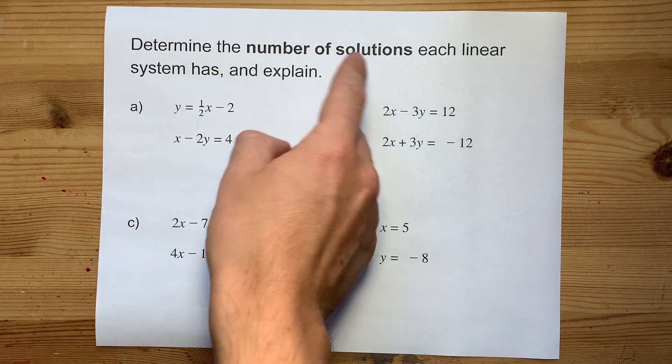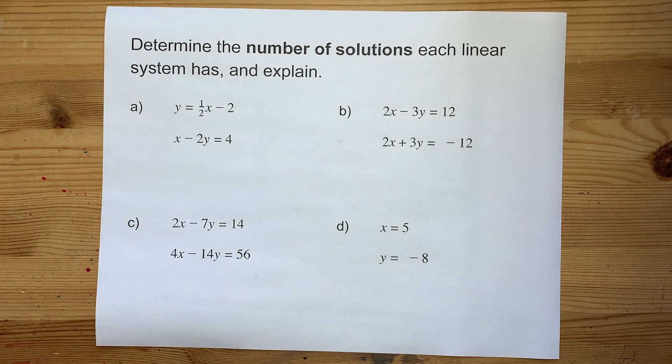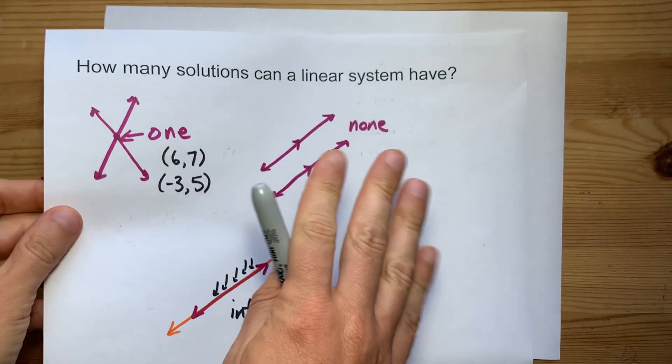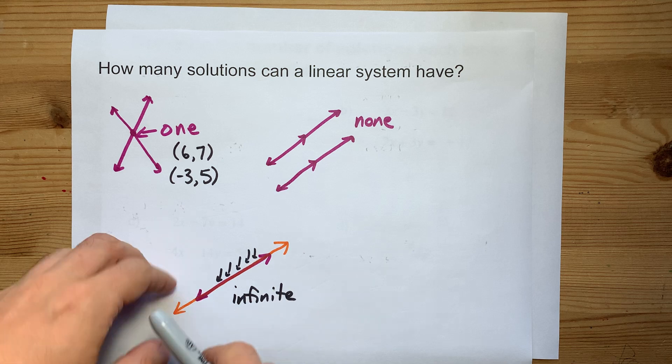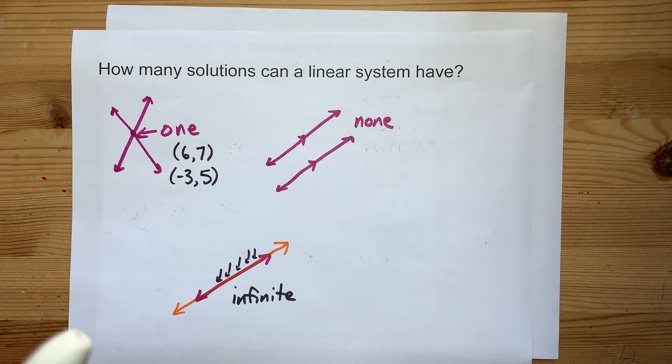How can you determine the number of solutions that a linear system has? Well, first you have to understand that linear systems can either have no solution, one solution, or infinite solutions.